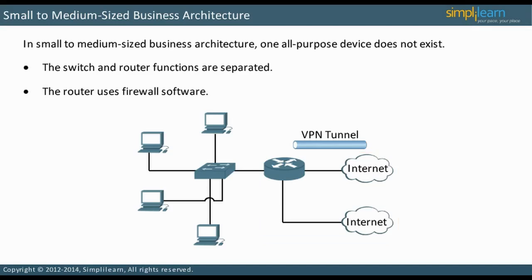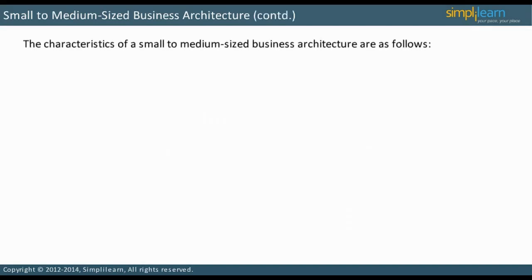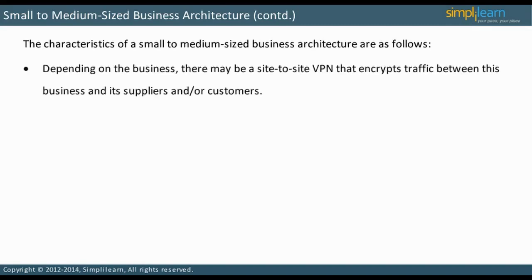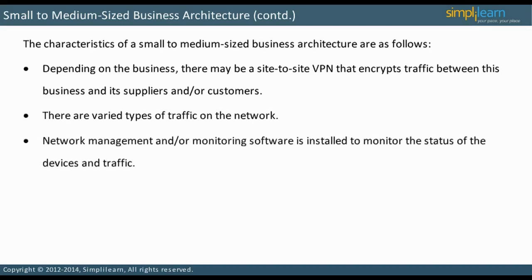Let us continue our discussion on small-to-medium-sized business architecture. Depending on the business, there may be a site-to-site VPN that encrypts traffic between this business and its suppliers and/or customers. There are varied types of traffic on the network. Network management and/or monitoring software is installed to monitor the status of devices and traffic. Wireless access can be implemented in any architecture. In the next slide, let us look at how wireless access works.